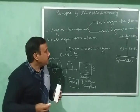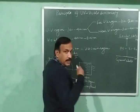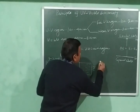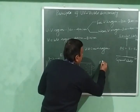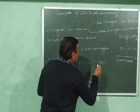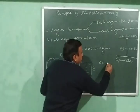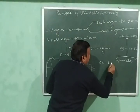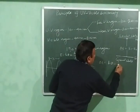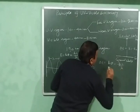So for absorption to occur, ΔE must be equal to the energy of the photon, that is hν or hc/λ.